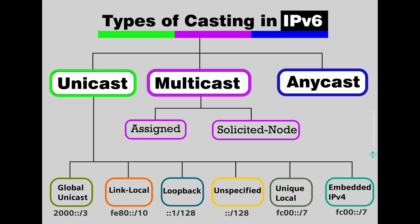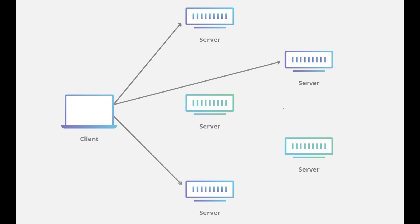Now let's look at IPv6. IPv6 removed broadcast and added anycast. Anycast, also known as IP anycast or anycast routing, is an IP network addressing scheme that allows multiple servers to share the same IP address. The anycast router sends the request to the server based on least cost analysis, including number of hops, shortest distance, lowest transit cost, and minimum latency.